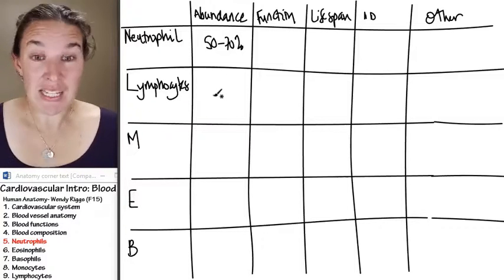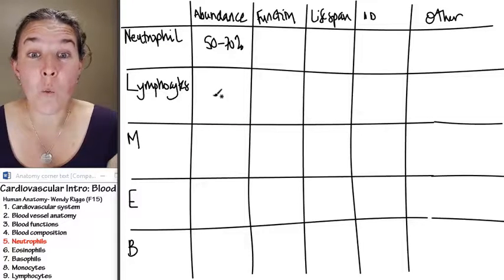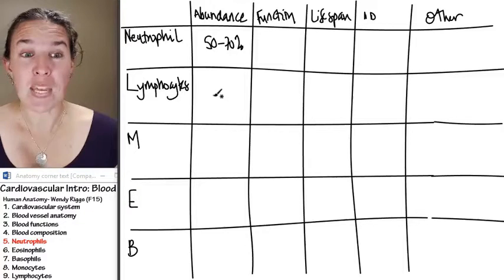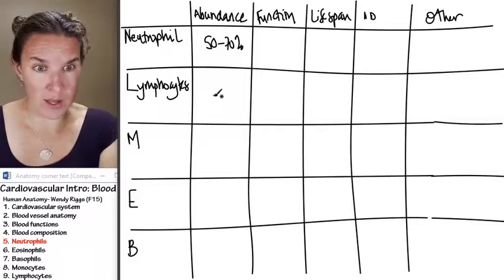Remember, this is abundance not of all cells. This is just of white blood cells because what we know is that there's a jillion red blood cells for every one white blood cell.